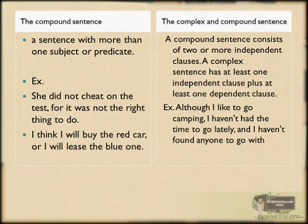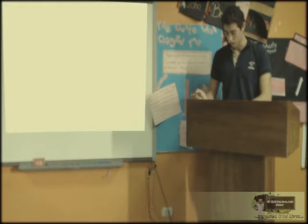The compound sentence: a sentence with more than one subject or predicate. Example: 'She did not cheat on the test, for it was not the right thing to do.' 'I think I will buy the red car, or I will leave the blue one.'